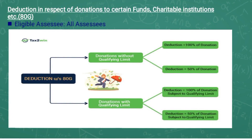Next, we have deduction in respect of donations to certain funds and charitable institutions under section 80G. This deduction is available to all assessees, whether individual, firm, HUF, or AOP. Deduction under section 80G is divided into two categories: first, donations without qualifying limit, and second, donations with qualifying limit. Donations without qualifying limit are further divided into two — 100 percent deduction and 50 percent deduction. Donations with qualifying limit are also categorized into 100 percent subject to qualifying limit and 50 percent of the donation amount.